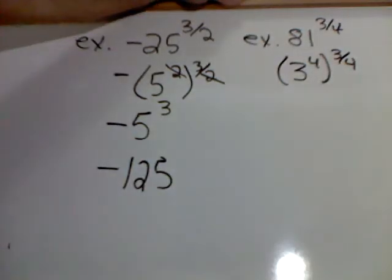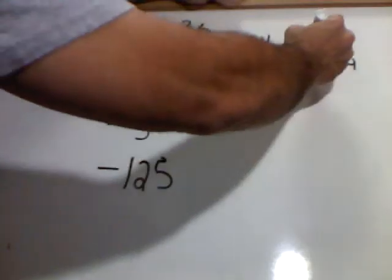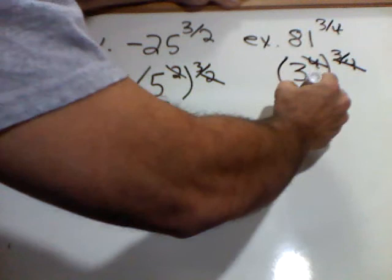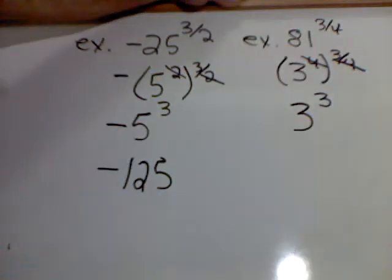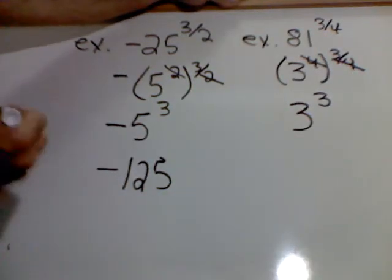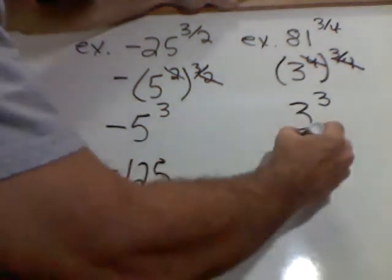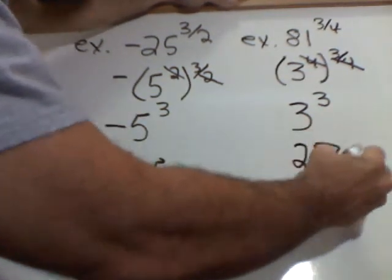Now, guess what? These 4's cancel, giving me 3 to the third power. And as we know, 3 times 3 times 3 gives me 27.